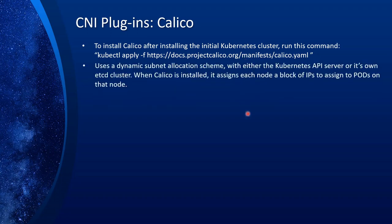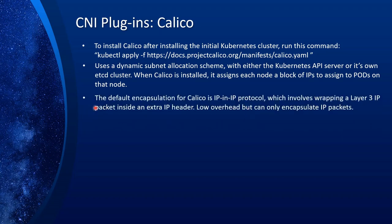Calico uses a dynamic subnet allocation scheme which uses the Kubernetes API server's etcd — or sets up its own etcd if you prefer — to maintain a reference of what IPs need to be assigned to each node. Once Calico is installed, it assigns a block of IPs to each node, and each node is then responsible for assigning IPs to the pods it creates. The default encapsulation for Calico is called IP-in-IP protocol, which involves wrapping a layer 3 IP packet inside an extra IP header.